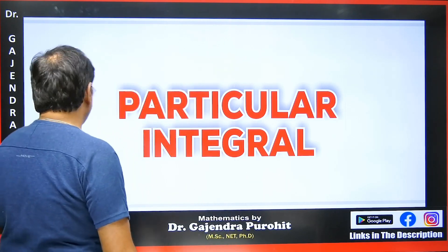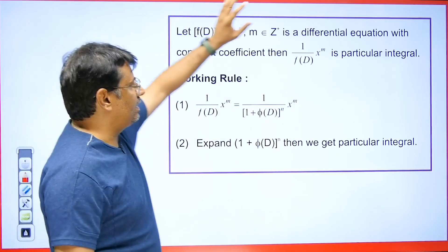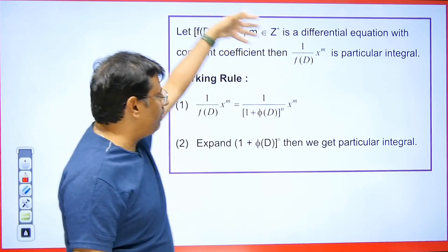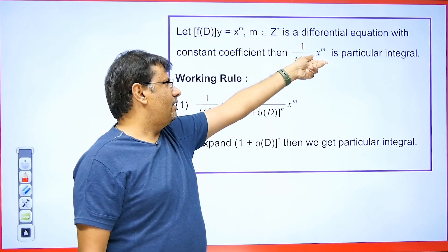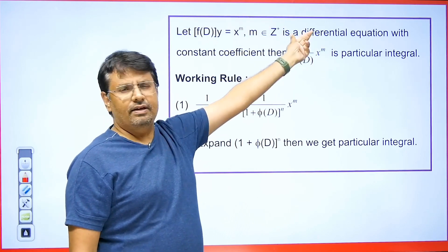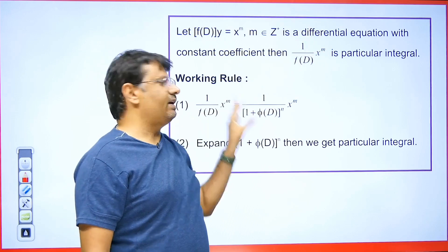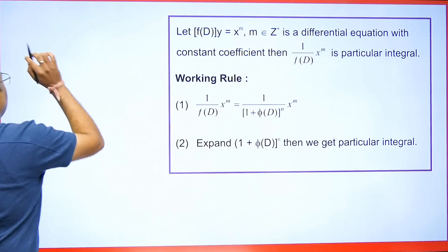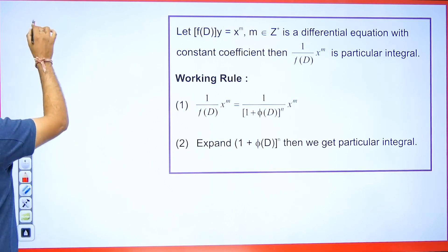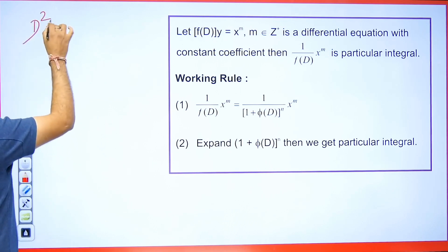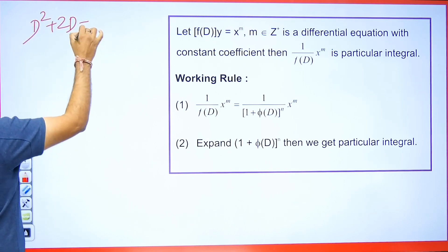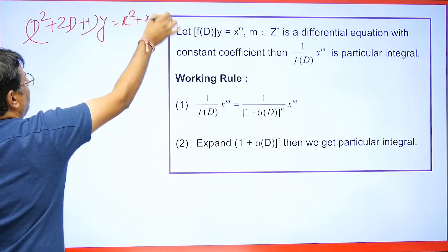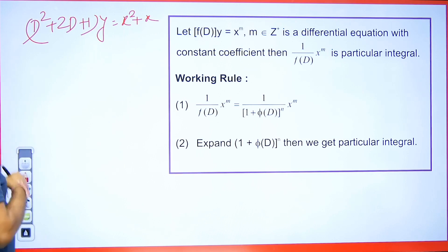Now let's begin. Whenever a function is given in the symbolic form, we will take the symbolic form to the denominator. Then we will take this to the numerator and expand it using the binomial expansion. Then we will calculate the PI. Now pay attention to this example: it is given as D square plus 2D plus 1, multiplied by y, is equal to x square plus x. You need to find the PI.